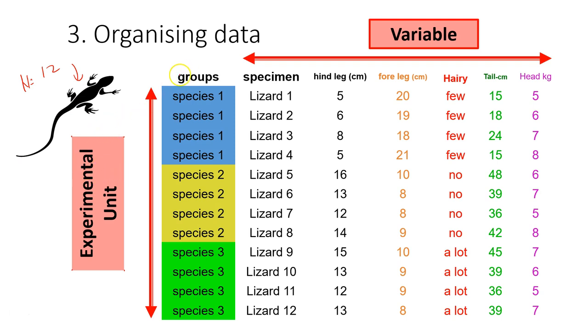First, as you can see, we have the variables: we have the group (the species name), we have the specimen ID, we have the measurement of the leg, high leg, and forehead. We also record the characteristics of the lizard - whether it has few hairs or no hairs - and also the length of the tail and the width of the head. So we have seven variables.